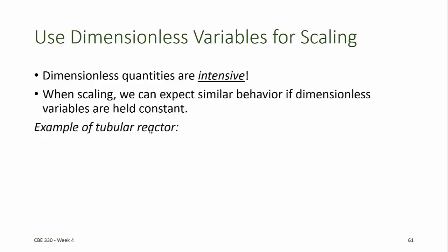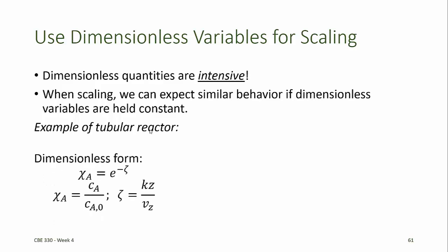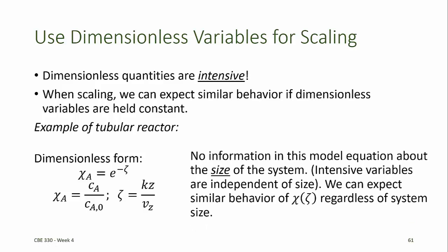Consider the example of the tubular reactor we looked at earlier. The model for the tubular reactor in dimensionless form has only two dimensionless variables: a dimensionless concentration and a dimensionless position down the length of the reactor. This model has no information about the size of the system because it's expressed entirely in intensive variables, which are independent of the size. This could be describing anything from a microfluidic device to an enormous chemical reactor — we can expect similar behavior for chi as a function of zeta regardless of the system size.